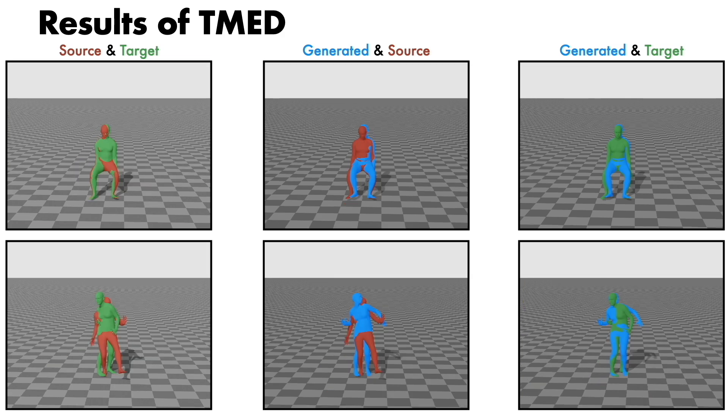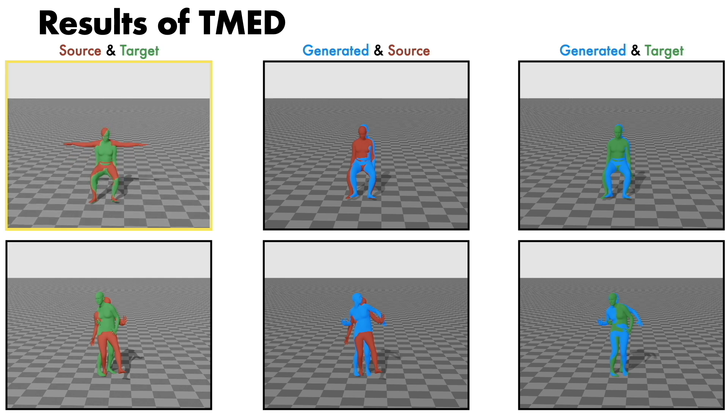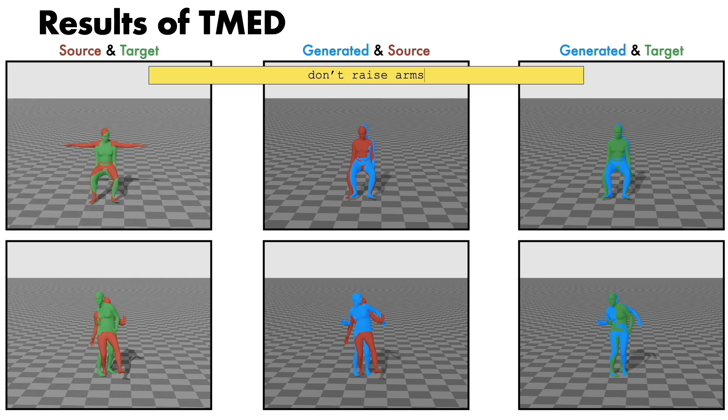In the top example, given the sitting animation and the edit text don't raise arms, the raising arms motion is removed in the generated example.